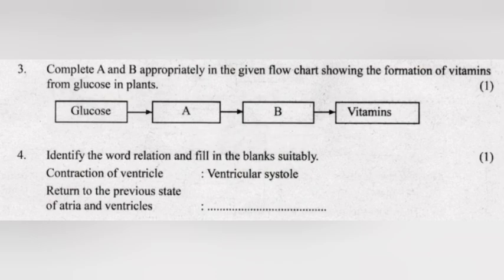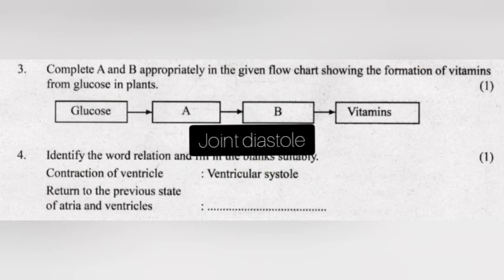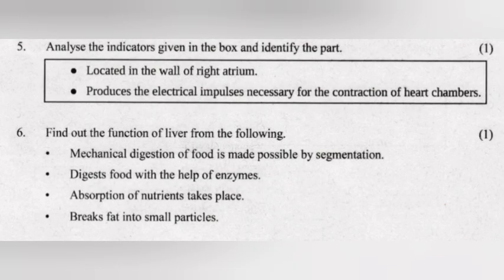Question 4: Identify the word relation and fill in the blank suitably. Contraction of ventricle: ventricular systole. Return to the previous state of atria and ventricles: Answer — joint diastole.